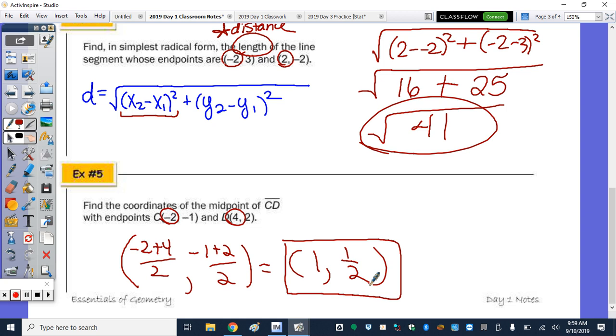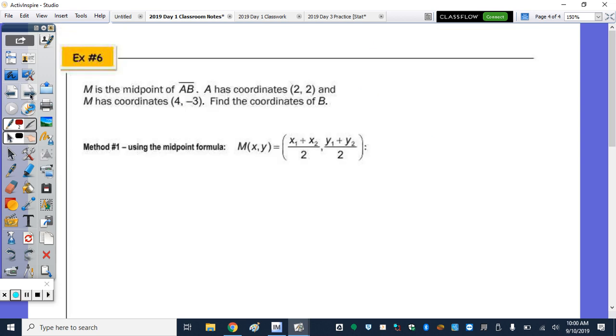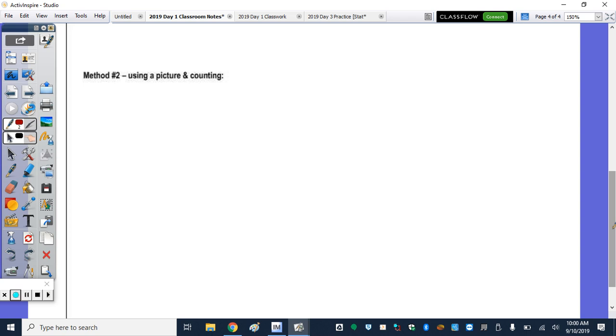The very last question of the day is an endpoint question. So not only might you be asked to find what the midpoint is, you may be asked what an endpoint is given a midpoint and an endpoint. There are two methods. You want to know the easy way or the hard way? Easy. I'm going to show you both, but I'll show you the easy first. So method 2 is the easy way, and that's simply just using a picture. So let's draw the picture. What do they tell us the coordinates are? So they give us A of 2, 2, and midpoint M, which is 4, negative 3. We're trying to find the coordinates of B.